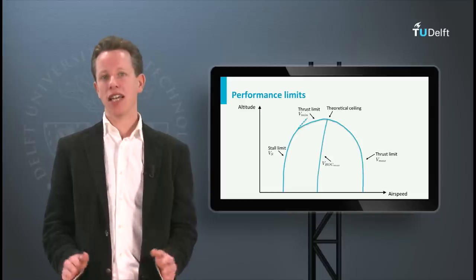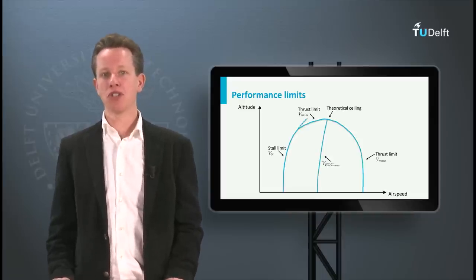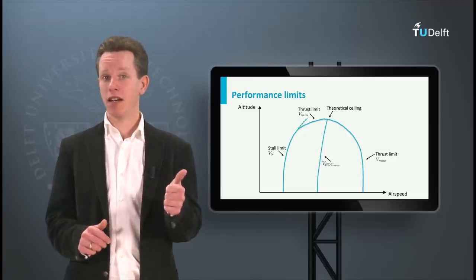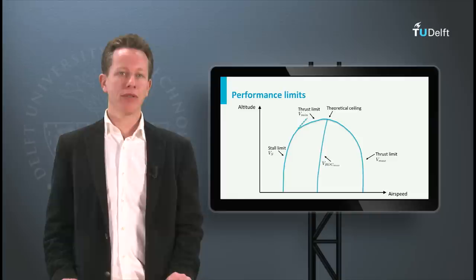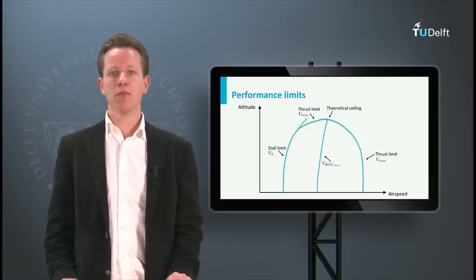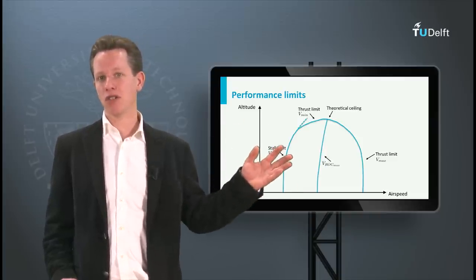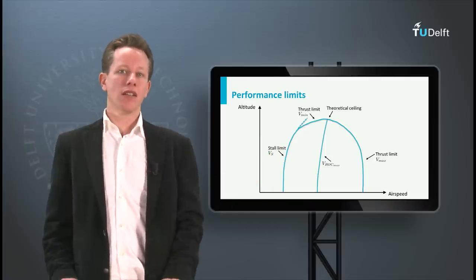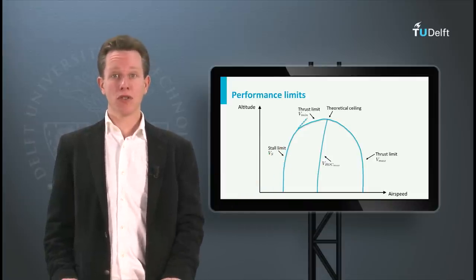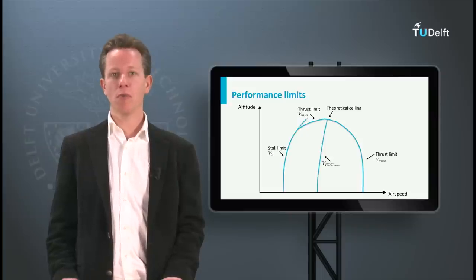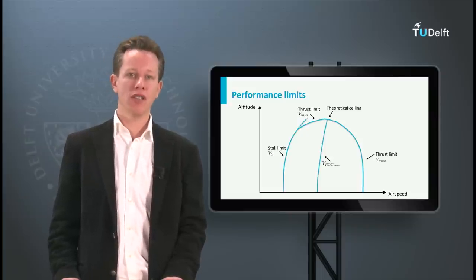This is what the aircraft is able to do based on the propulsion system characteristics, the aerodynamic performance, and the aircraft weight. However, this does not necessarily mean that the aircraft is allowed to fly in all these conditions. There are some other operational factors which also need to be taken into account. I will address the operational limits of an aircraft in this video.